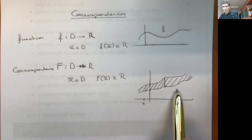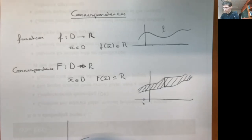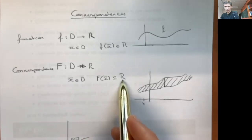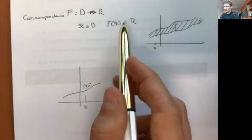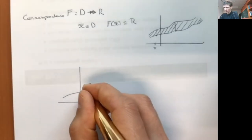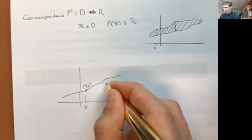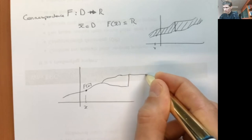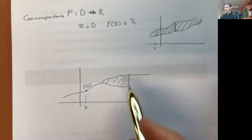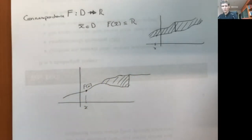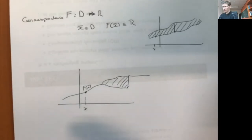Correspondences can take many different shapes. For example, for some values of x, f of x, which is a subset of R, only contains a single element — it's a set containing a single element. Then it could open up, and it could collapse down to a single element again. Basically, you can have many various correspondences with very strange shapes if you depict them in a two-dimensional plane.